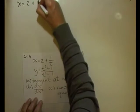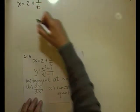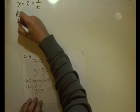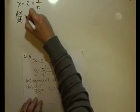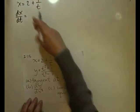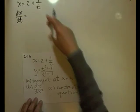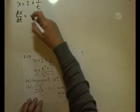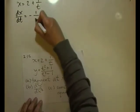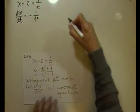I've got x equals 2 plus 1 over t. So dx/dt, differentiating with respect to t — 2 is a constant so that gives 0, then the 1/t term is t to the power negative 1, so its derivative is minus t to the power negative 2, giving dx/dt = −1/t².